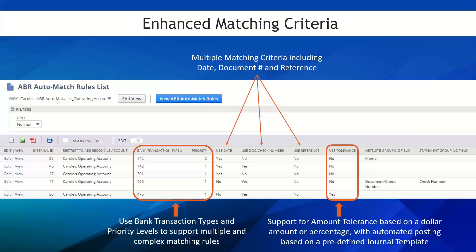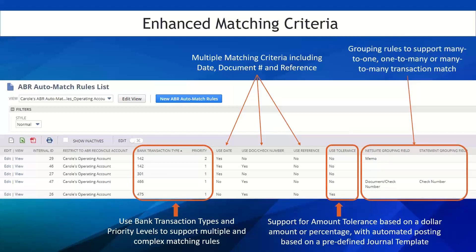A recent product enhancement introduced a concept of amount tolerance to not only support exact amount matches, but also allow amount tolerance based on either a dollar amount or percentage value, with automated posting to the NetSuite GL based on predefined journal templates. Superior grouping rules capabilities facilitate matching of many NetSuite GL transactions to a single consolidated amount on the bank side, and vice versa. Not only can transactions be grouped based on common document numbers, but Nolan ABR will recognize common denominators in other fields, such as transaction date and reference text.